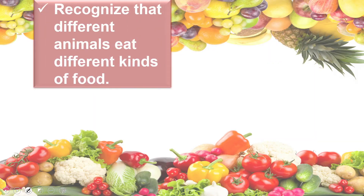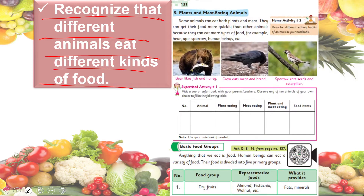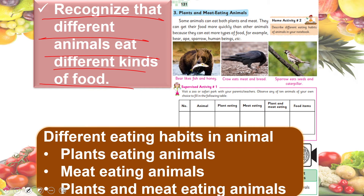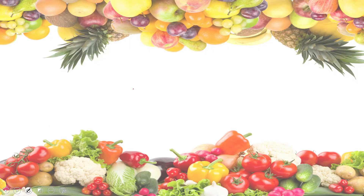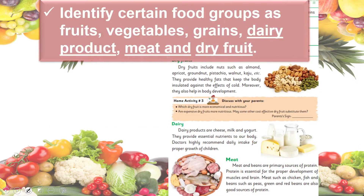In the next lecture, students were able to recognize that different animals eat different kinds of food. Animals have different eating habits: some eat plants, some eat other animals or meat, and some eat both plants and animals. Due to these eating habits, animals are classified as plant-eating, meat-eating, or those that eat both.